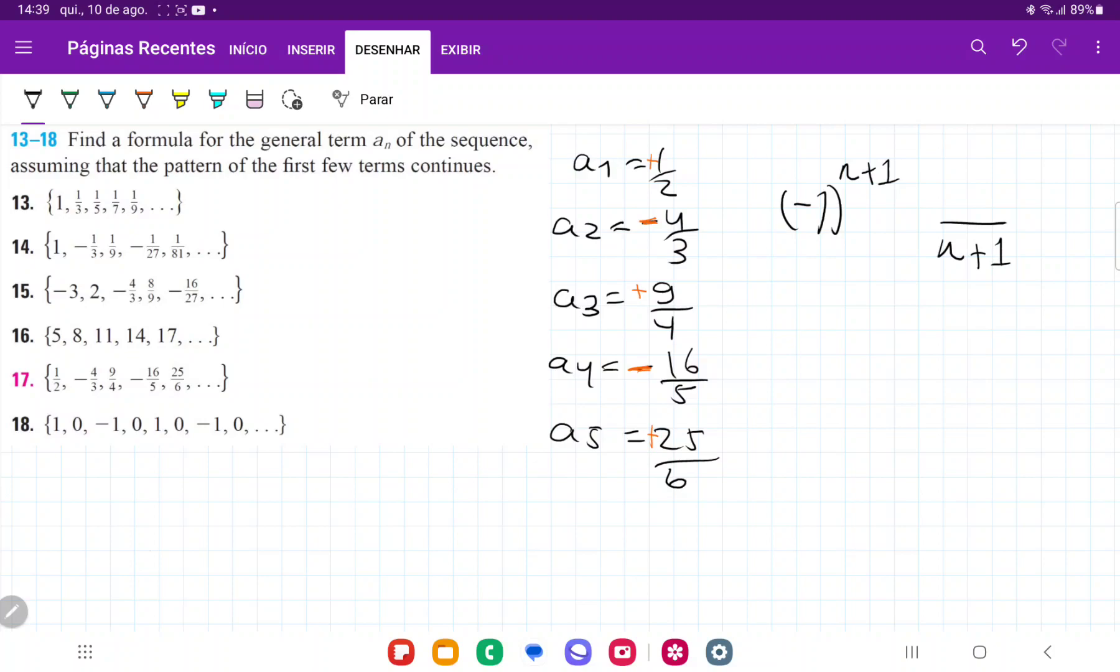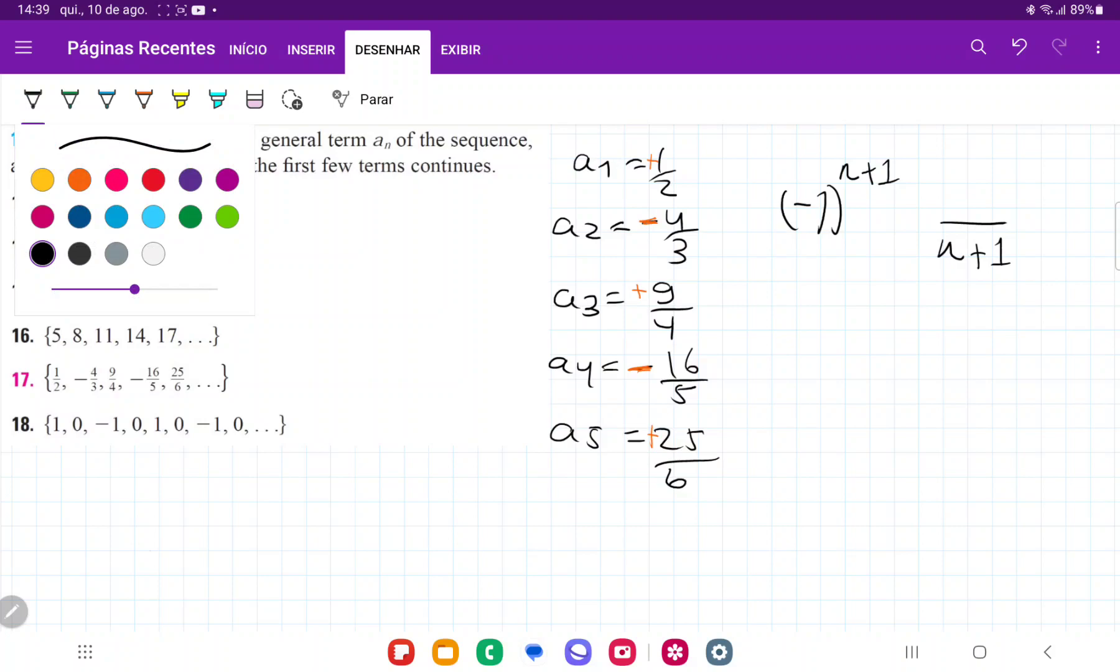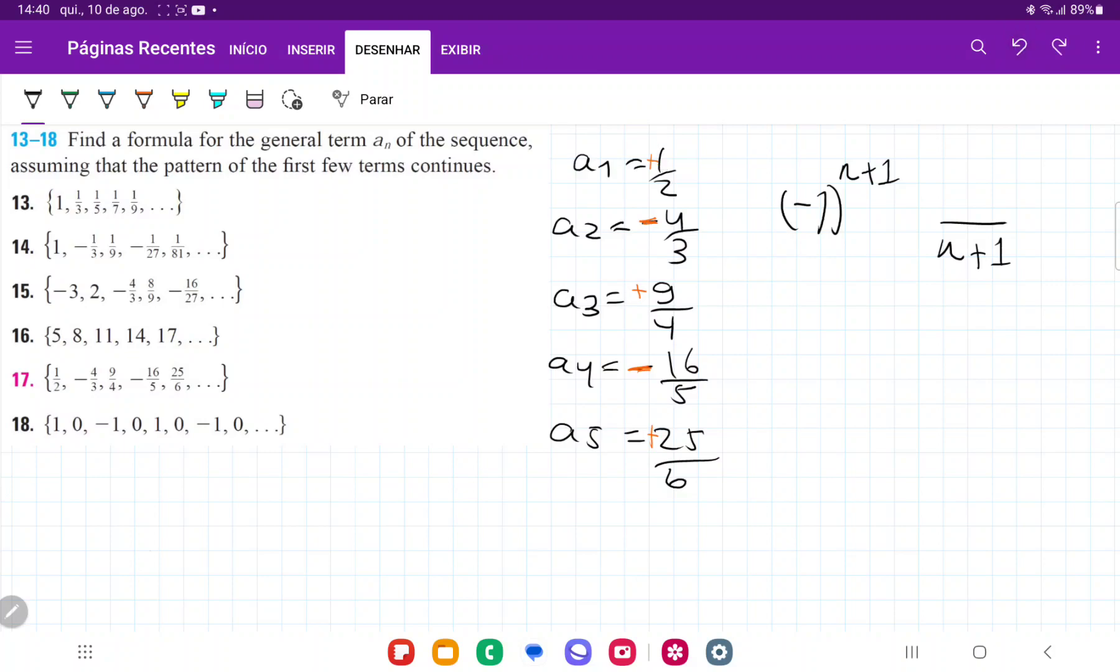What about the numerator? If we compare it to the index, we have: 1 and 1, 4 and 2, 9 and 3, 16 and 4, and 25 and 5. It appears that it's just the index squared, because 2² is 4, 3² is 9, and so on.